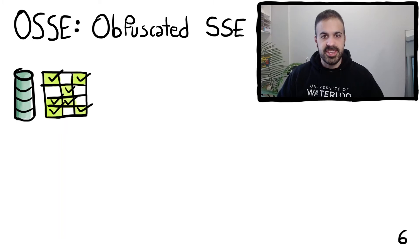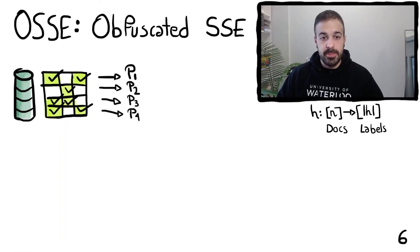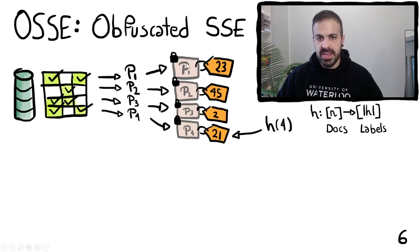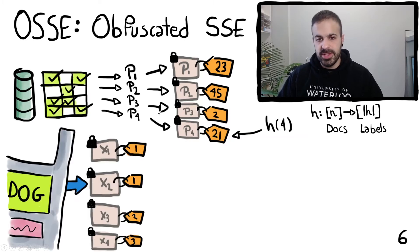Our scheme is called OSSC, which stands for obfuscated searchable symmetric encryption. We have the data set and the search index as well as a hash function that maps n documents to a set of labels. We generate a polynomial for each of the documents — these polynomials capture the keywords of each of the documents. Then we encrypt the polynomials using an IPPE scheme and attach a label, which is just the hash of the document id. For example for the fourth document if the hash of 4 is 21 we attach the label 21 to this polynomial. Then we send those polynomials to the adversary.